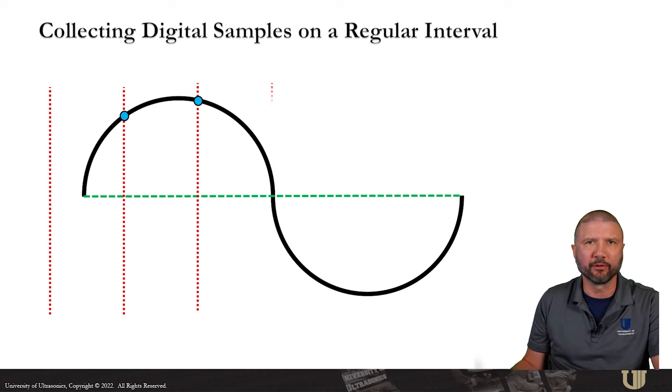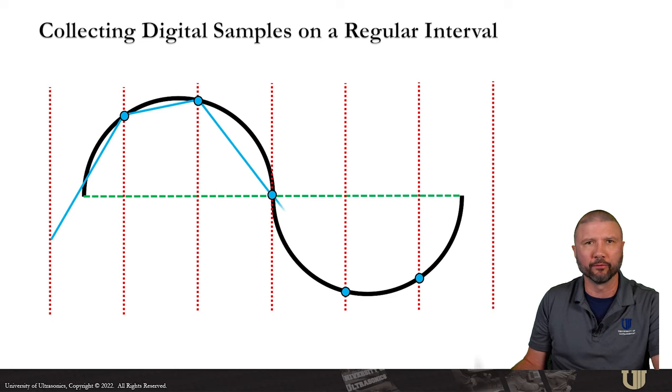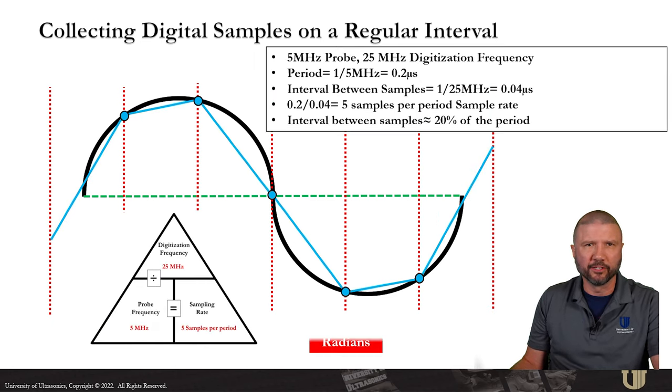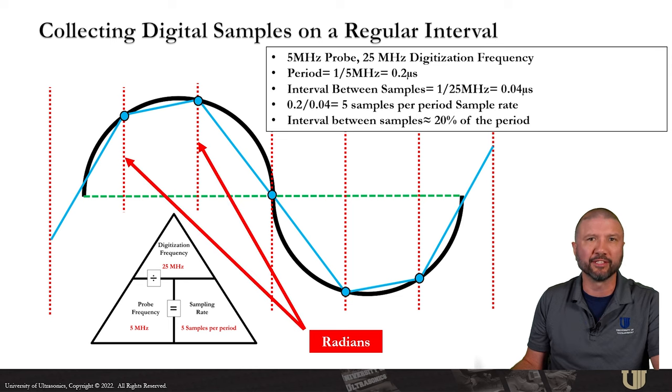In order to calculate amplitude and timing fidelity, we first have to consider what happens when we collect digital samples on some regular interval along our original analog waveform. This regular interval between samples is controlled by our digitization frequency. And when we compare that to the examination frequency, we can calculate our sampling rate, which can be described as how many samples per period we collect. When we draw these vertical lines representing our sampling interval, we're basically splitting the horizontal time base of our cycle into equal parts from left to right. This makes calculating timing fidelity pretty simple because we're only considering the period or the wavelength.